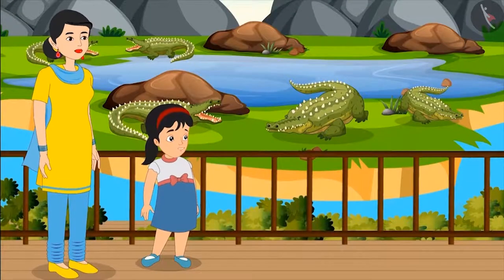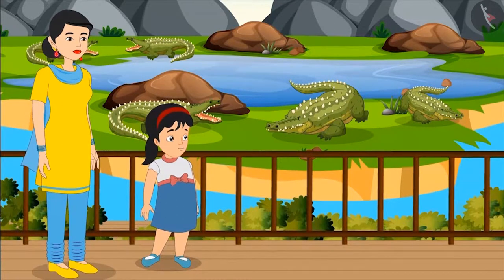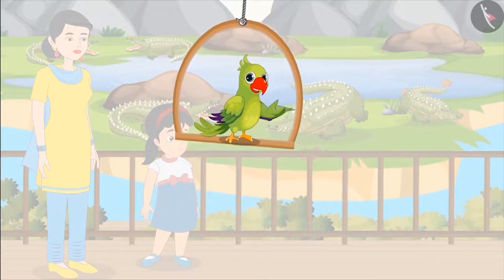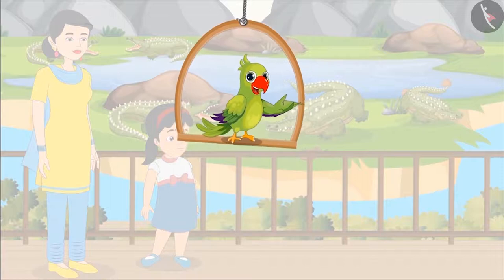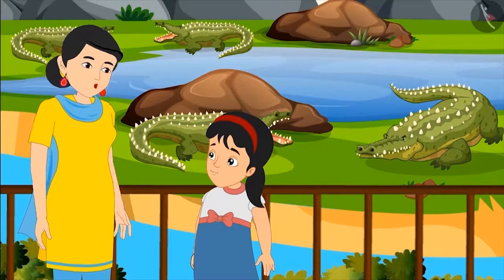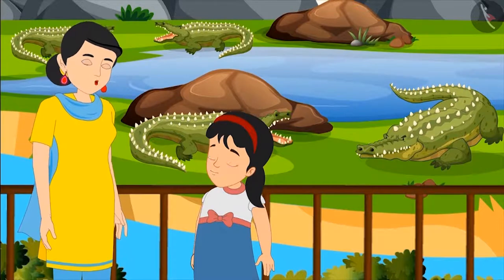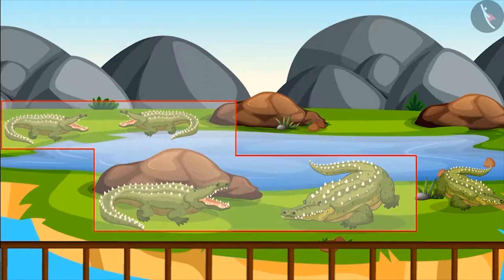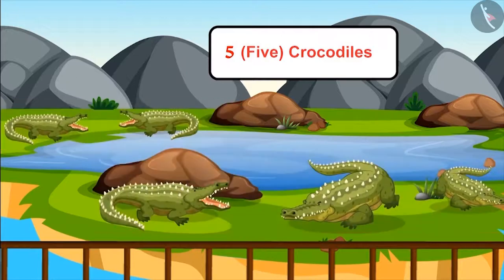But which animal is in that water paddock? I have never seen it before. Can you tell me which animal is there in that water paddock and what is its number? There are crocodiles in that paddock. Can you tell me how many crocodiles there are? 1, 2, 3, 4 and 5 — that means that paddock has 5 crocodiles.